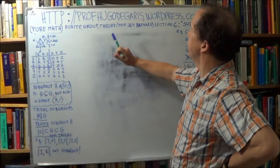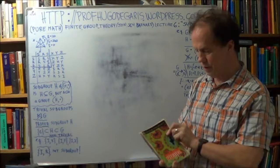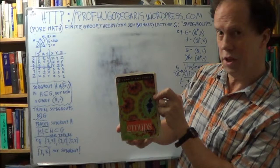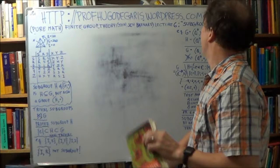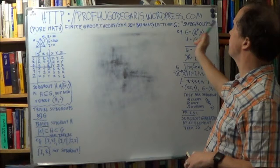This is lecture six in the course finite group theory at junior and senior level. First author is Barnard and this is the textbook that I'm using for this course or lecture set. It's in the Teach Yourself series and the title is Mathematical Groups. The topic for this lecture is Subgroups, lecture number six.